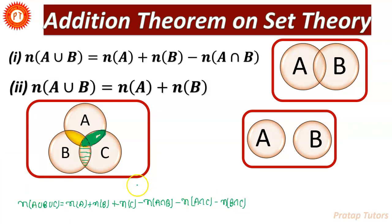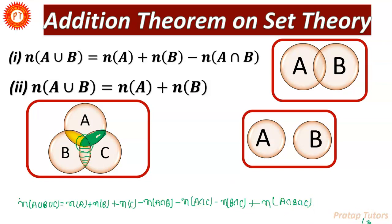But we can see that the central area, which is the common portion of all three non-empty sets, also needs to be accounted for. So we add back n(A∩B∩C). I hope you understand the concept of the addition theorem.